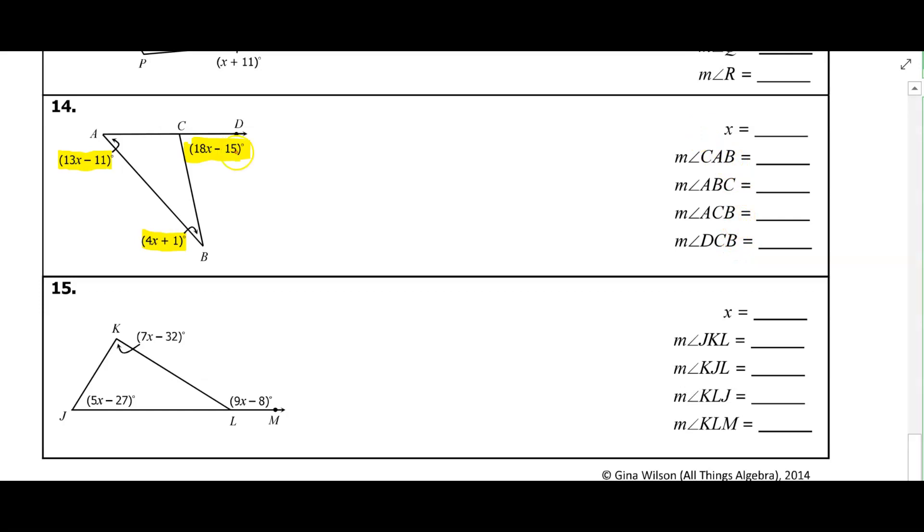So I know that the exterior angle, that 18X minus 15, is equal to the sum of the non-adjacent or the remote interior angles. So if I add up those two angles on the inside of the triangle, 13X minus 11 plus 4X plus 1, we know that they're going to be equal. The exterior angle is equal to the sum of the non-adjacent interior angles.